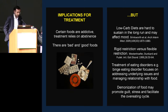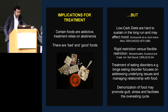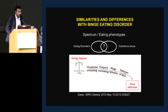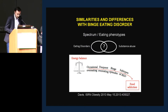Treatment of eating disorders, for instance the closest construct — binge eating disorder — focuses on the roots of the problem, underlying issues, and managing relationships with food. Most people from the eating disorder community express that the demonization of food may even promote guilt, stress, and facilitate the overeating cycle, becoming counterintuitive and paradoxical. There is also a lot of work to be done identifying specificities of binge eating disorder, and a recent article suggests food addiction can have a role as a subtype of binge eating disorder.